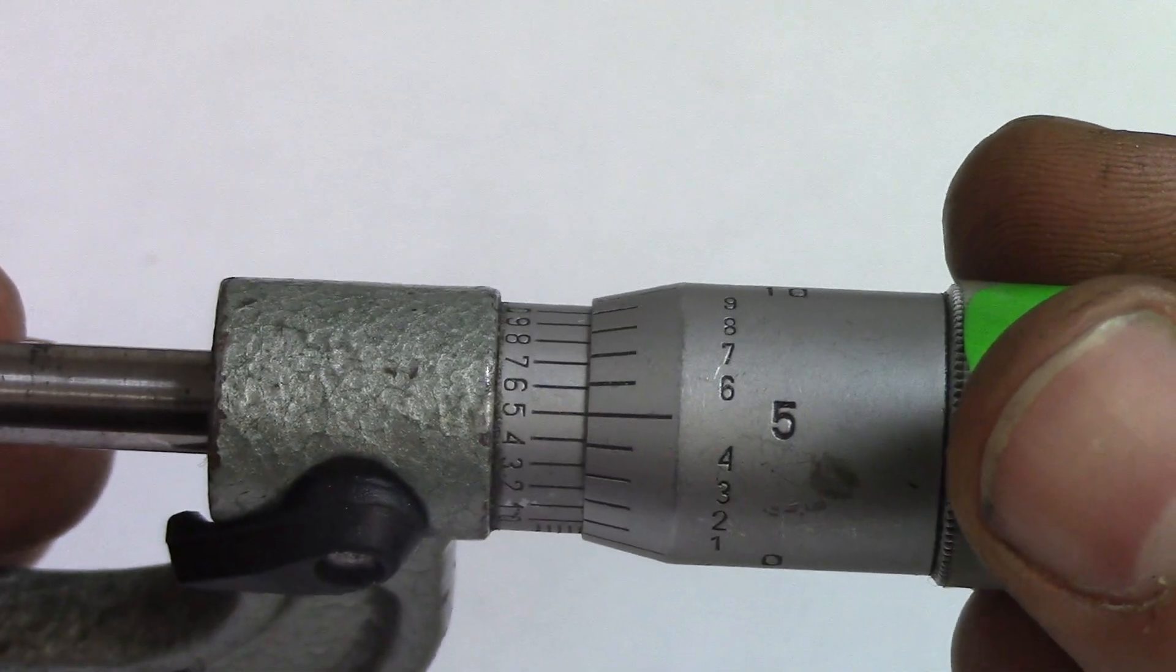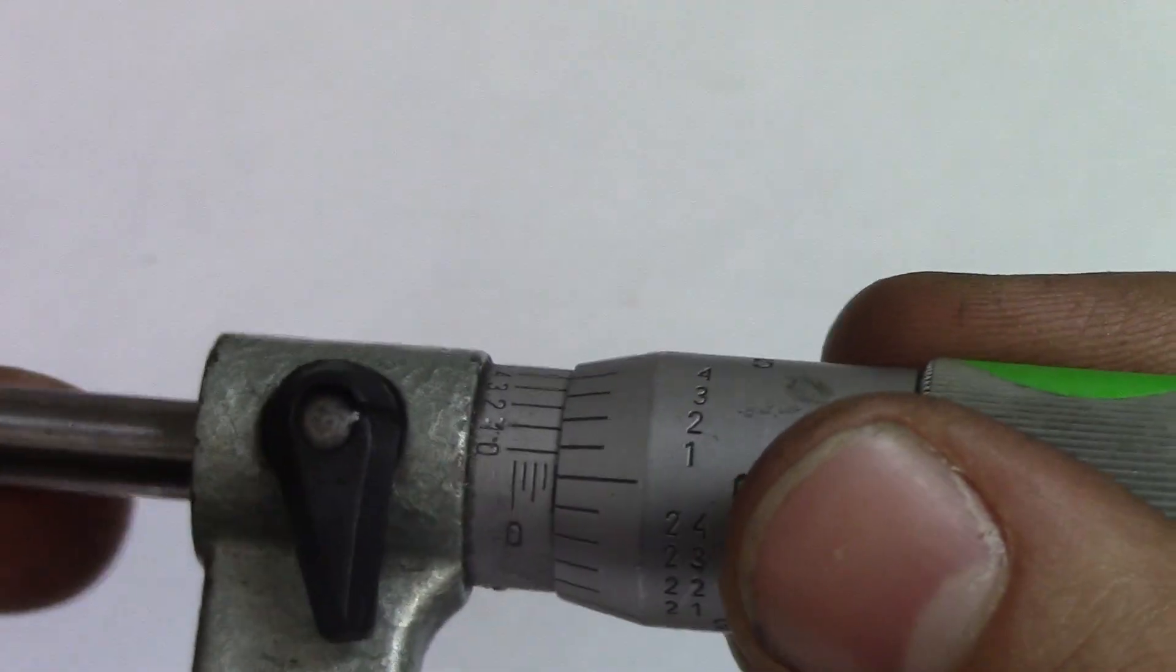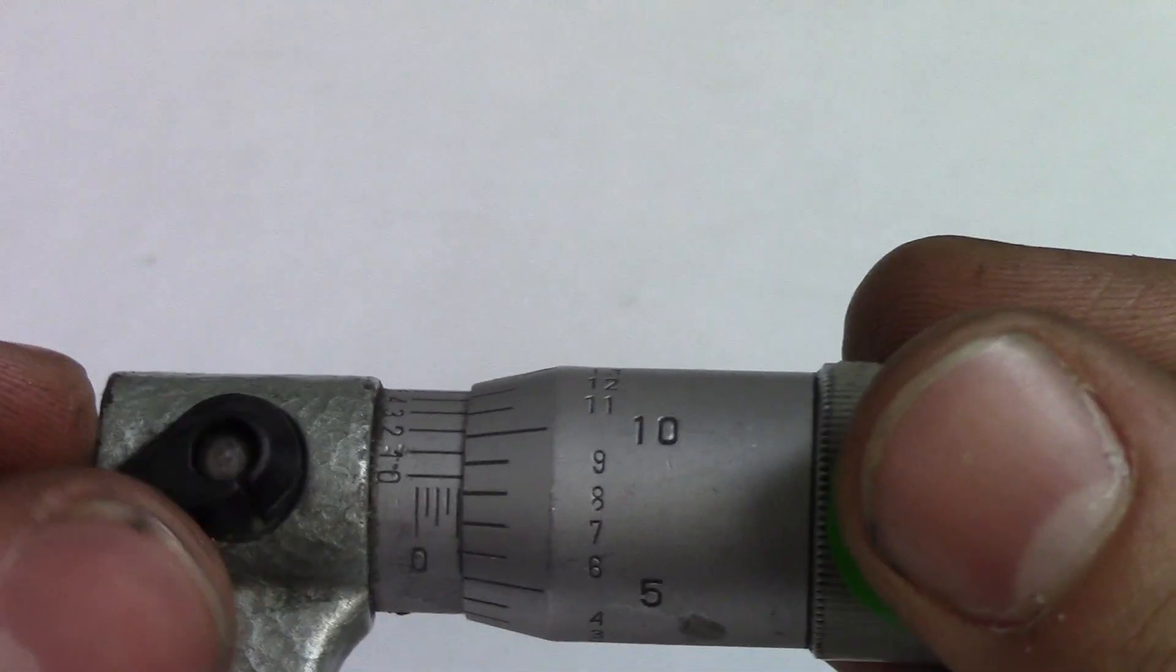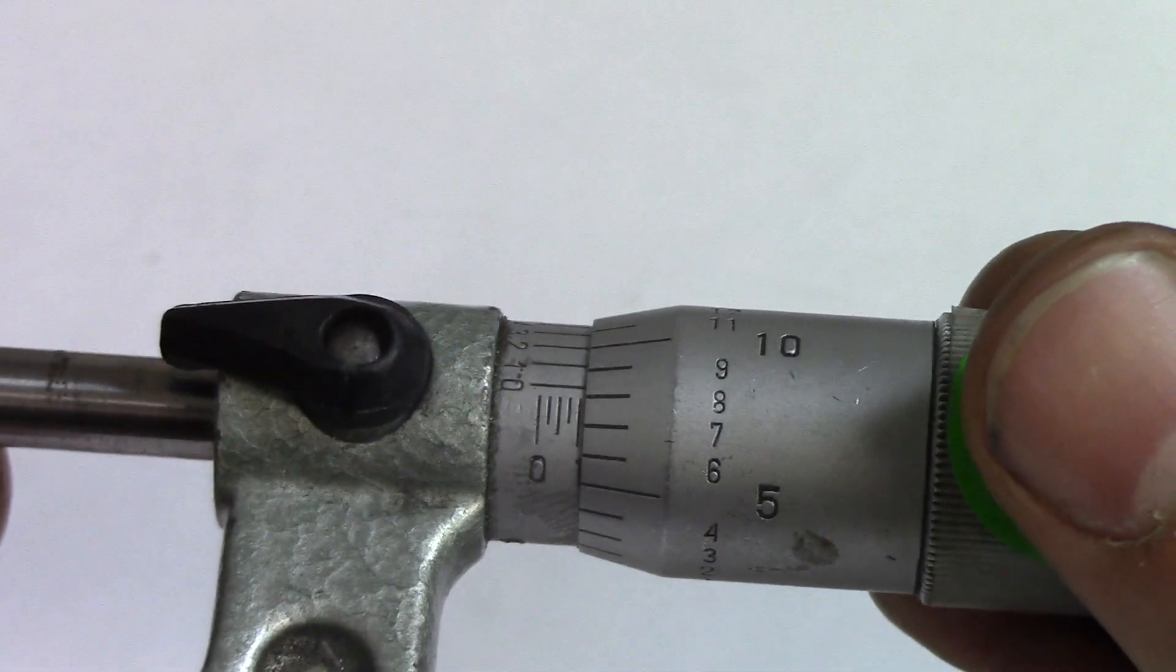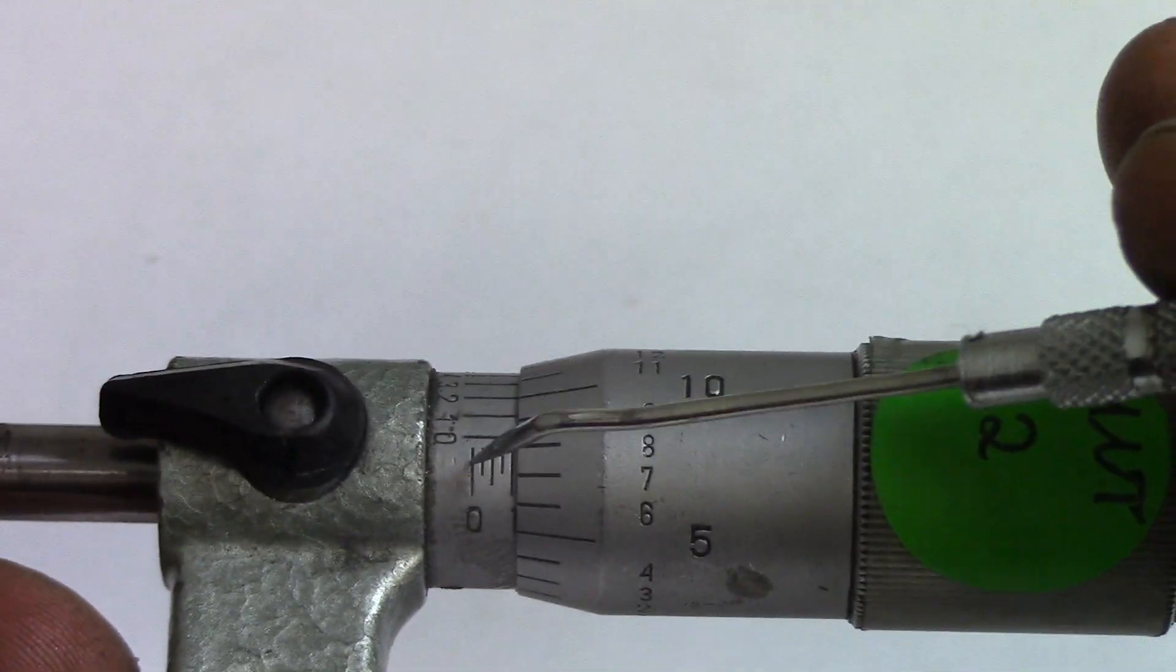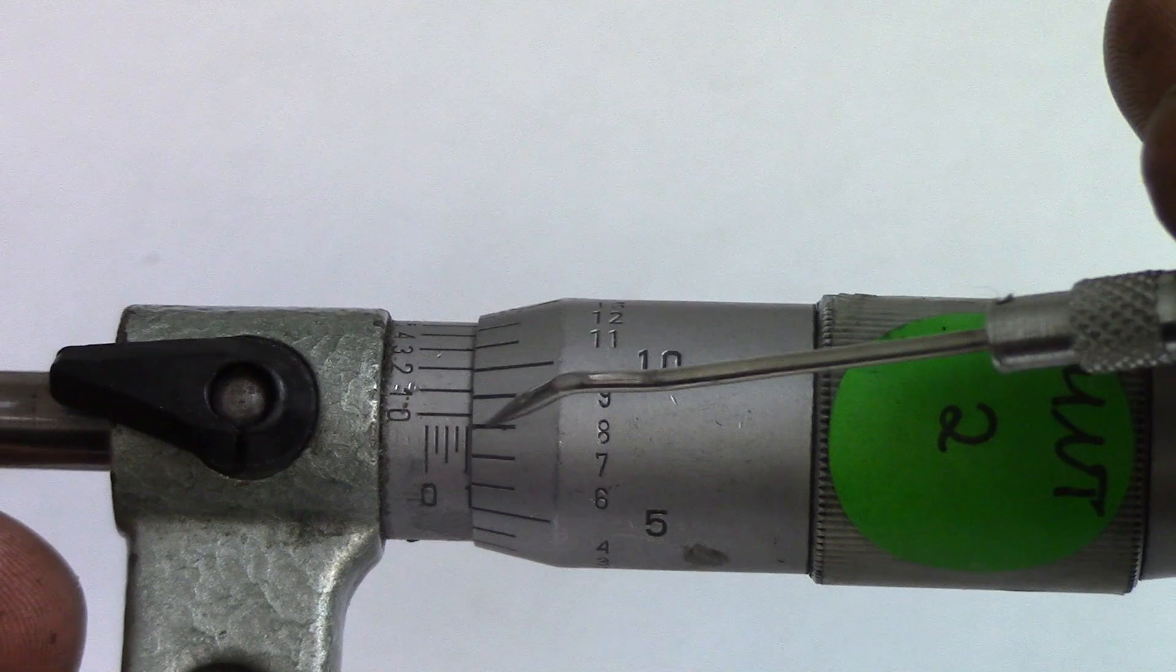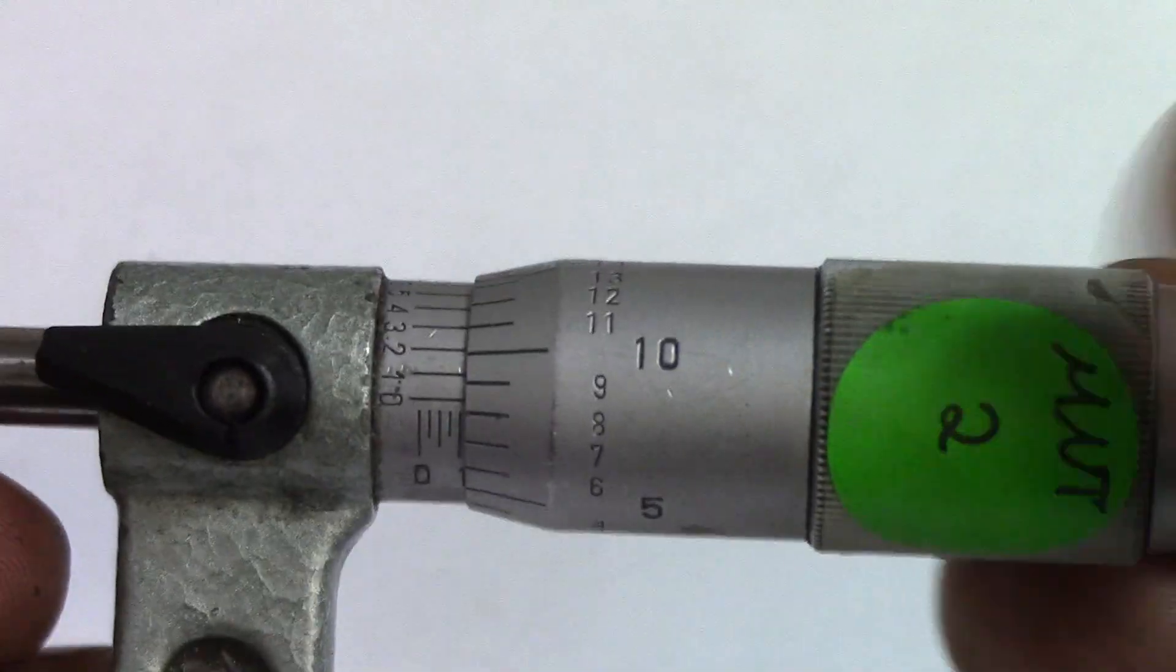Now I'm going to loosen the lock, rotate it to just a random number, and then lock it so I can show you how to read it. We are at 0.1—that's 25, 50, 75, and then 100. Then you count all the way up to 8, so you're at 108 thou. Then you look at your tenths and see which mark lines up. Four lines up, so you are at 108 thou and four tenths.